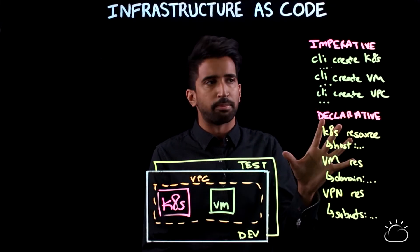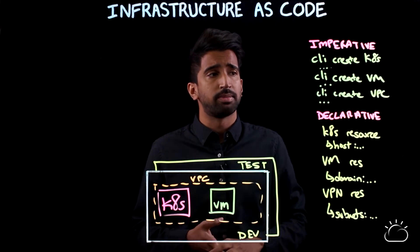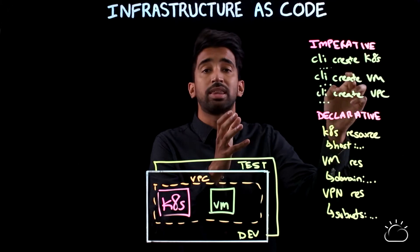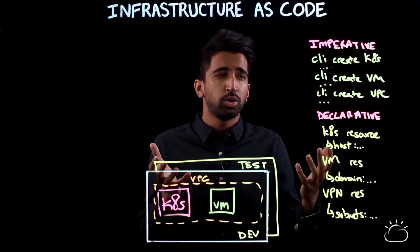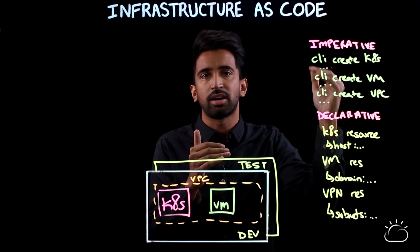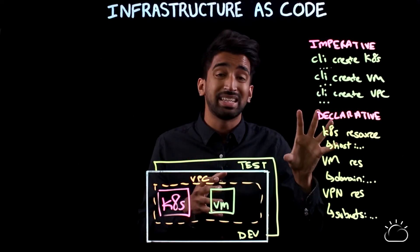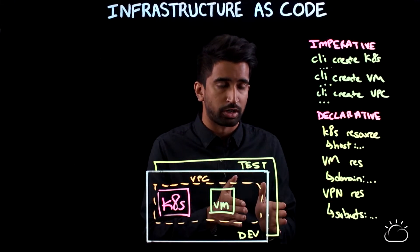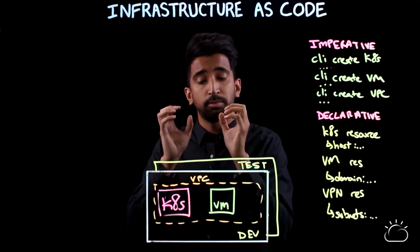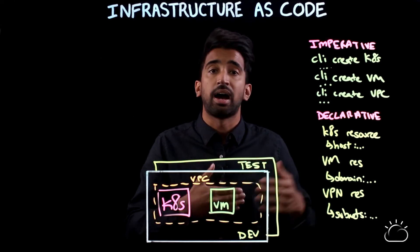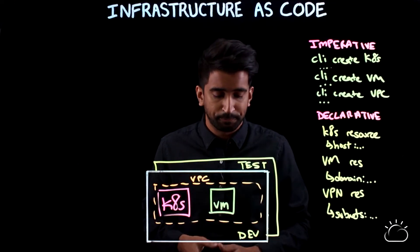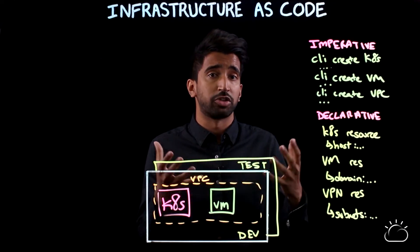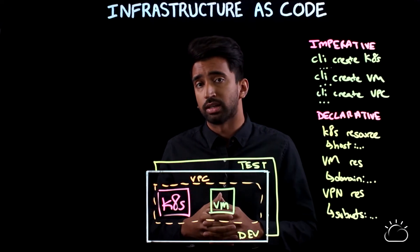Let's take this simple example. If you ran the imperative script multiple times, you would actually end up with multiple environments. And if one of the steps halfway through failed, you would have to add error handling to tear down the steps that did succeed. With the declarative approach, no matter how many times you run the script, you end up with the exact same infrastructure. You could provision your environment the first time, then run it again later to ensure that your environment hasn't changed. This is why I prefer a declarative approach.